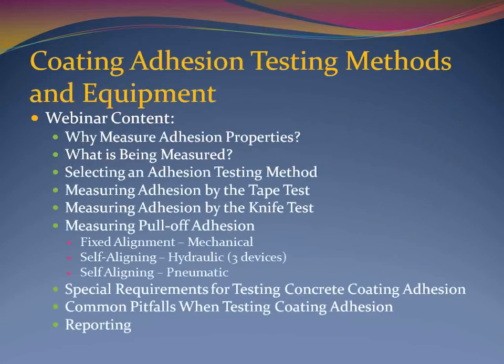During this webinar, we'll be discussing a variety of topics related to adhesion testing of coatings on metallic surfaces, including why the adhesion of coatings and lining systems is assessed, what property of a coating is being measured when it is being evaluated for adhesion, how to select an adhesion testing method, how to measure the adhesion of coatings using the tape and knife tests, how to measure the pull-off or tensile strength of a coating system using five different testing instruments, some common pitfalls associated with performing adhesion evaluations, and finally, specific items to be reported when conducting an adhesion test.